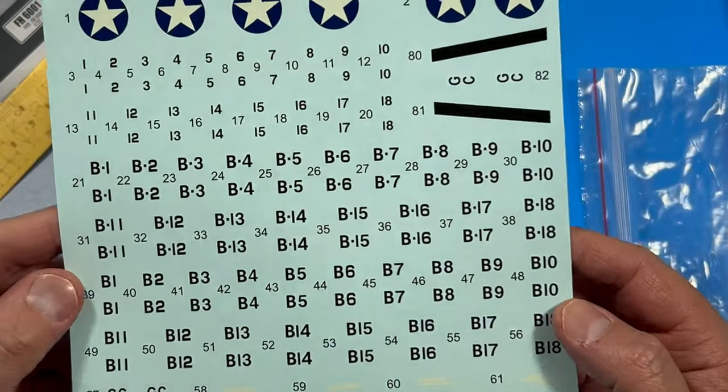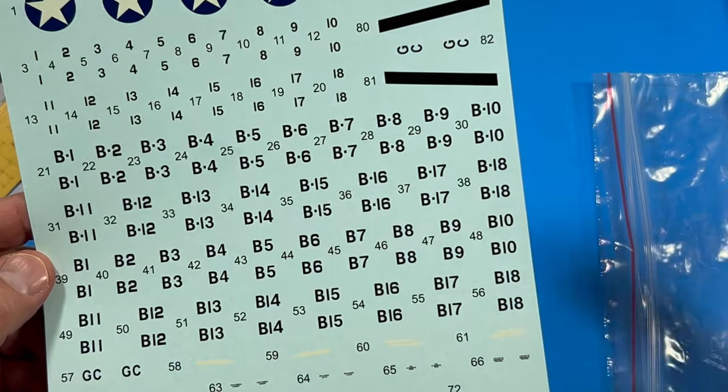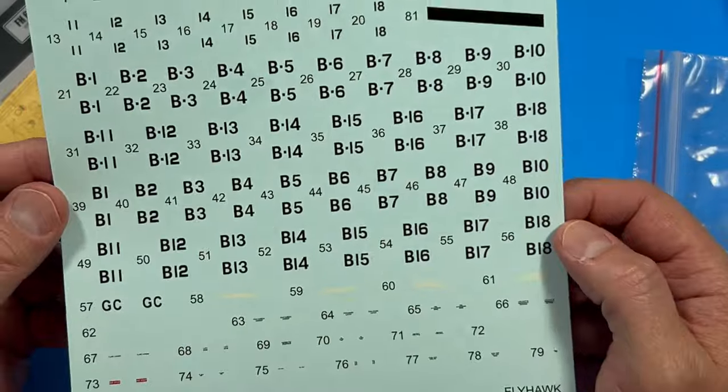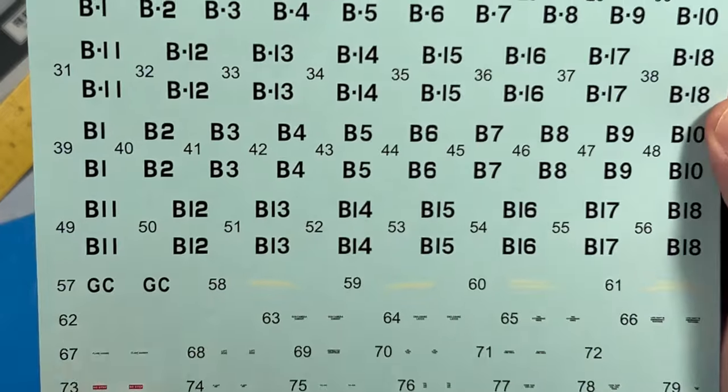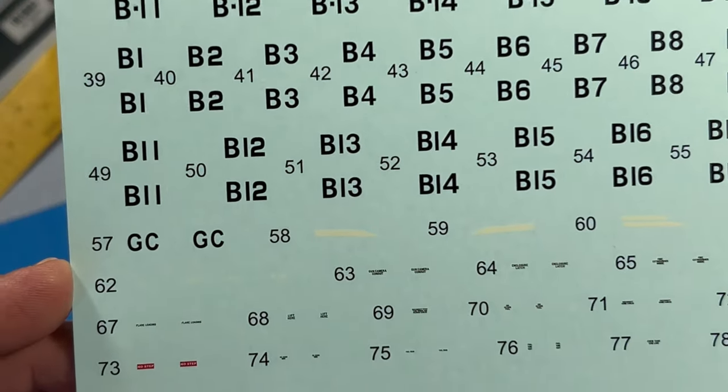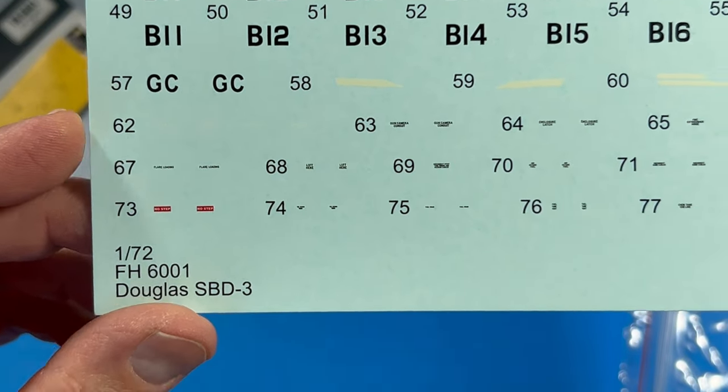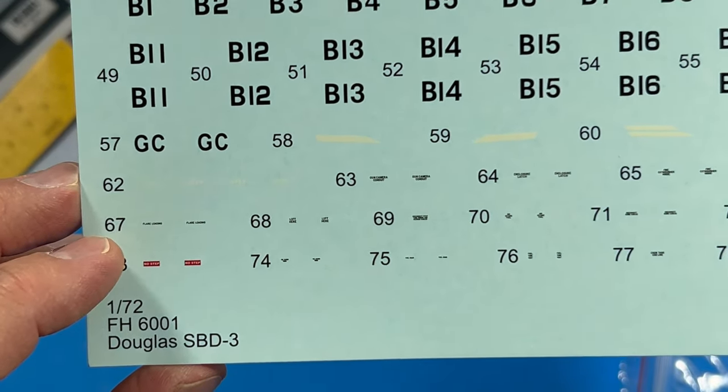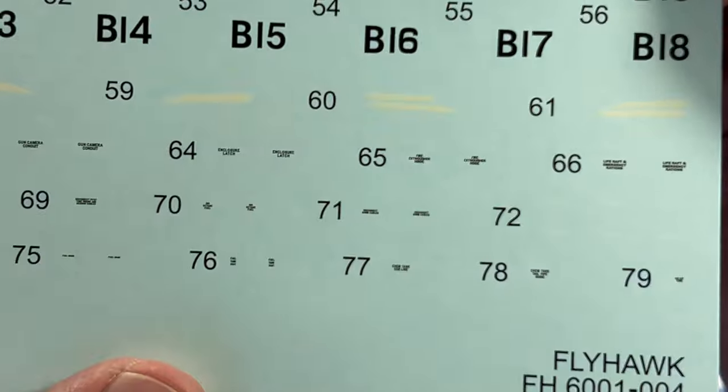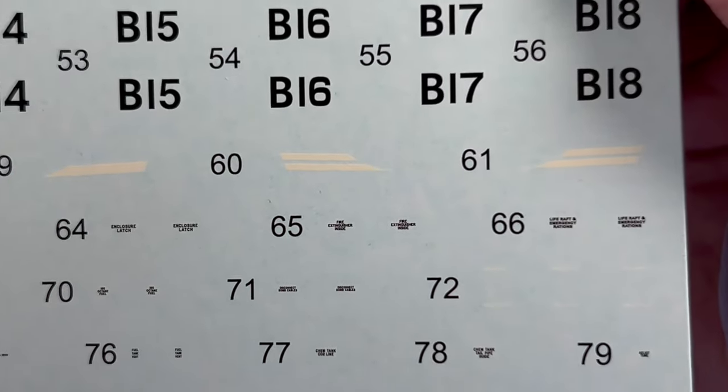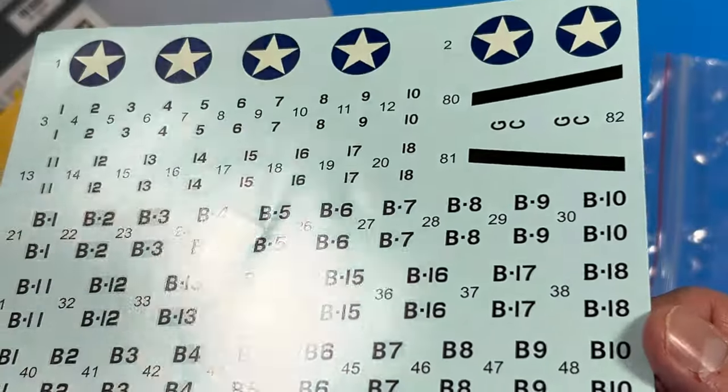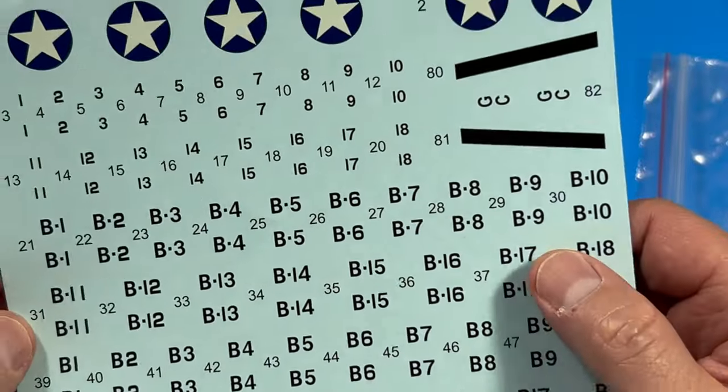Here's the decal sheet. You get tons of different squadron markings. And you can just take your pick. And so, that's pretty much it. There's a few stencils. You can actually read those. Even with my poor eyesight. Anyway, but you can actually read those if you get up close. I don't know if the camera would pick those up or not. And honestly, I don't see a lot of carrier film. So, I think these are going to be pretty good.